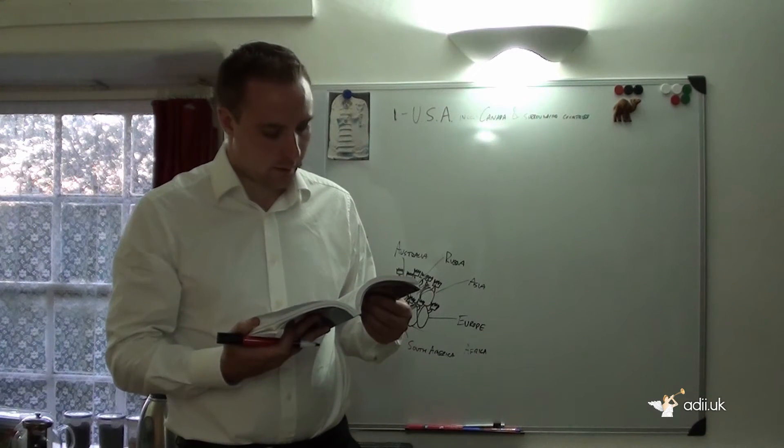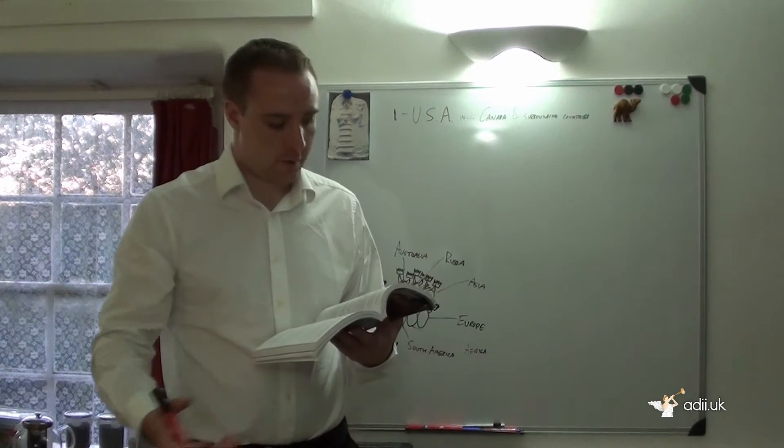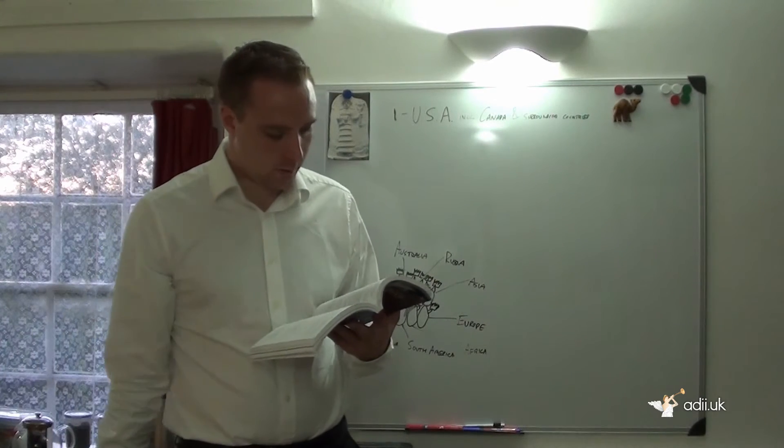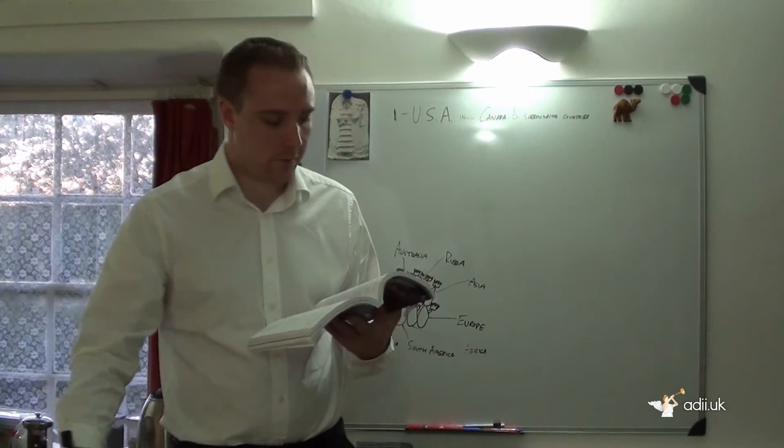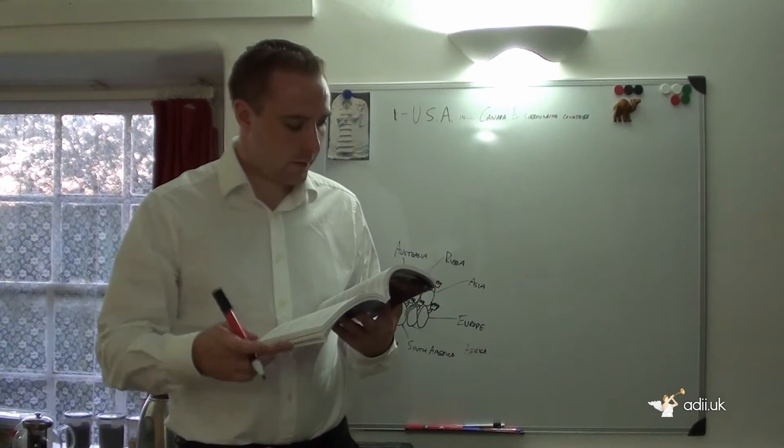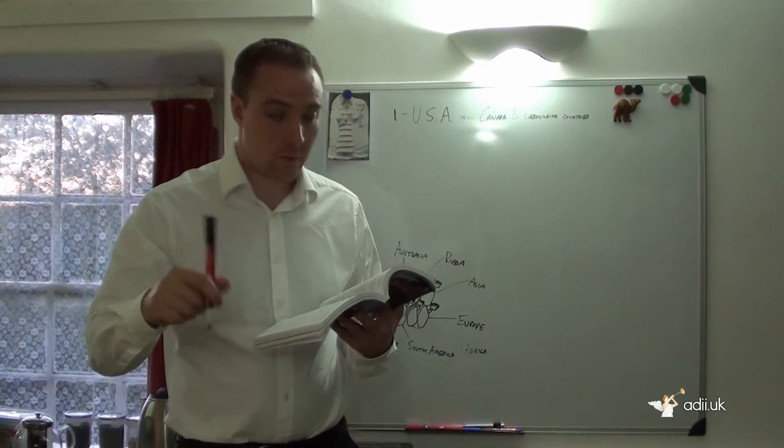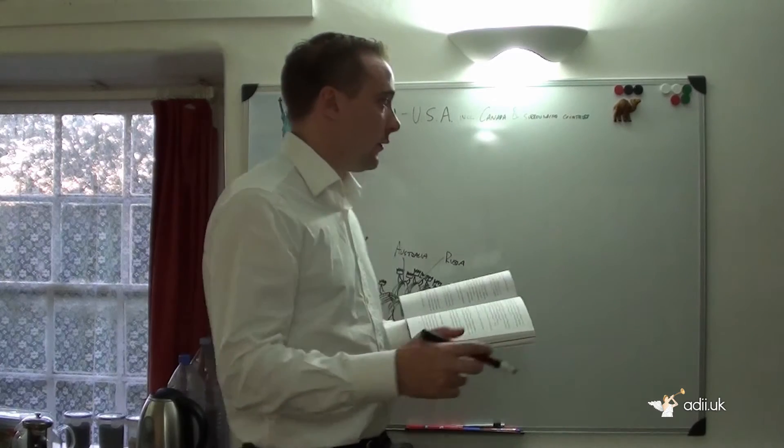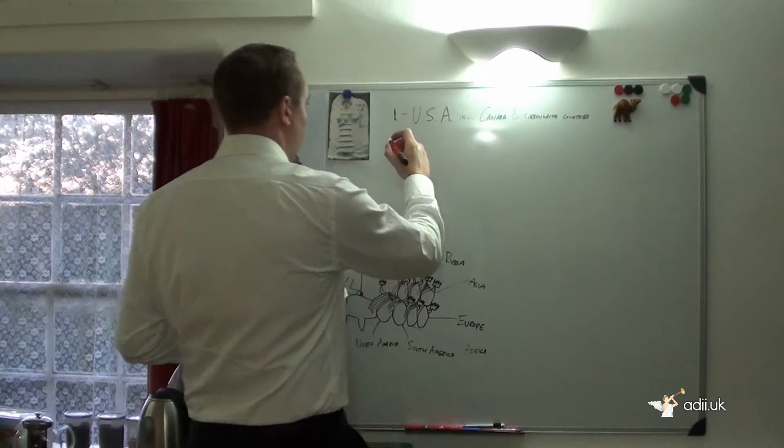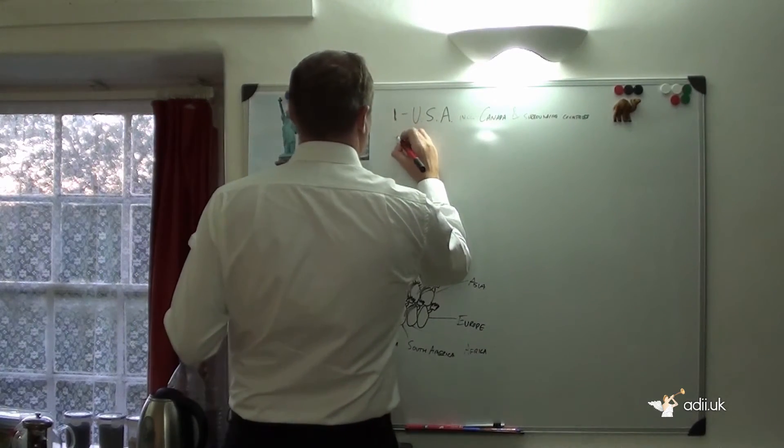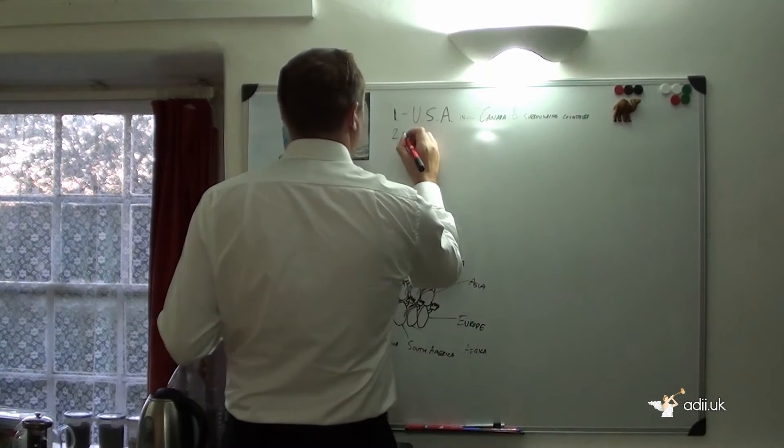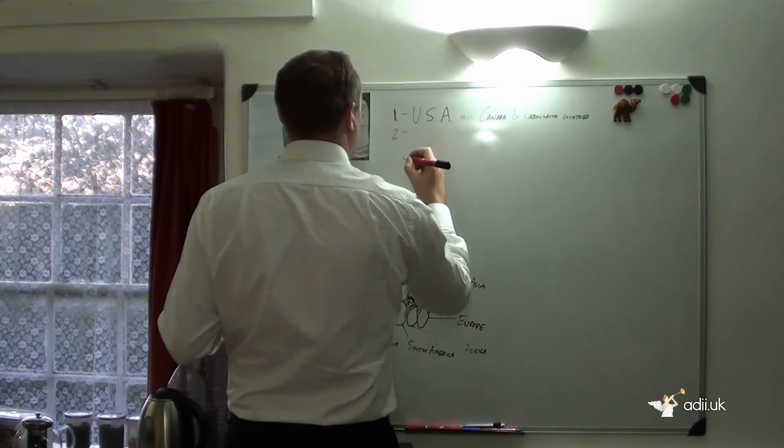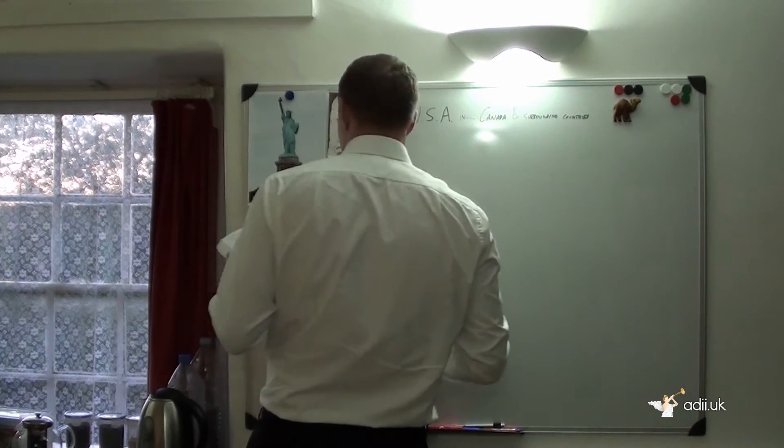John is standing on the sea here, and he sees seven heads coming out of the sea. These are the seven continents. The ten horns on the heads are the ten regional groupings of the world. Then there will be ten rulers, one over each regional grouping.